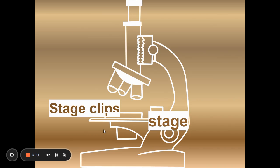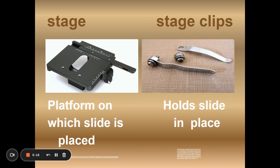The stage and the stage clips. Most of them on our microscopes are square. There are a few microscopes that have a circular stage. But it is a platform on which you're going to place your slide. The stage clips are going to be used to hold the slide in place.